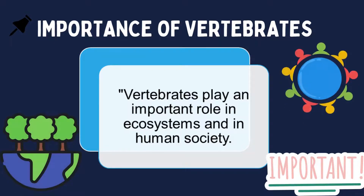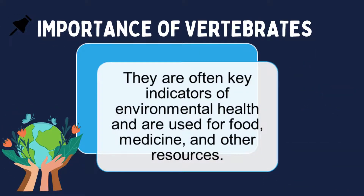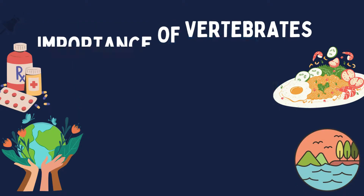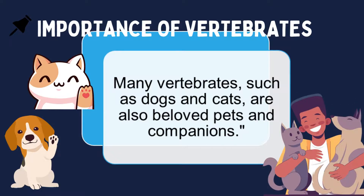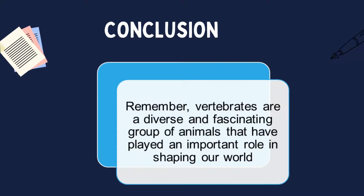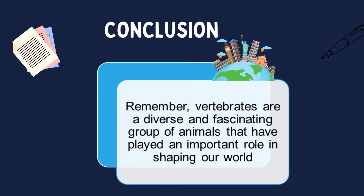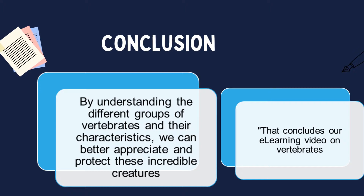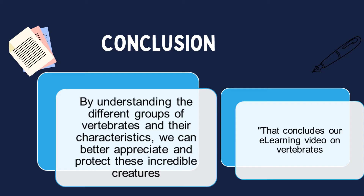Vertebrates play an important role in the ecosystem and in human society. They are often key indicators of environmental health and are used for food, medicine, and other resources. Many vertebrates such as dogs and cats are also beloved pets and companions. By understanding the different groups of vertebrates and their characteristics, we can better appreciate and protect these incredible creatures.